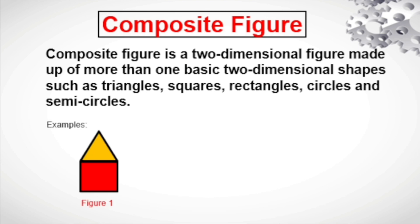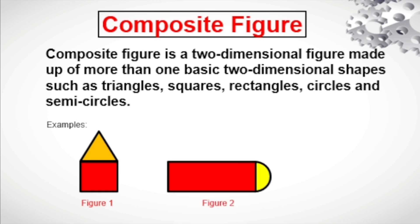Here are some examples of composite figures. Figure one is made up of a square and a triangle. Figure two is made up of a rectangle and a semicircle. Figure three is made up of a square and a circle, wherein a circle is inscribed in a square, or there is an overlapping of figures.